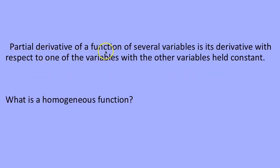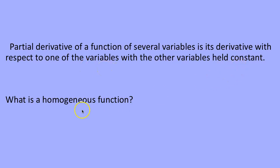The partial derivative of a function of several variables is its derivative with respect to one of the variables with the other variables held constant. So if f is a function of x and y, the partial derivative of f with respect to x treats y as constant.